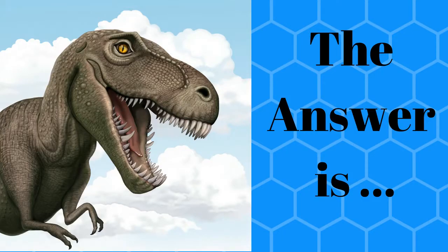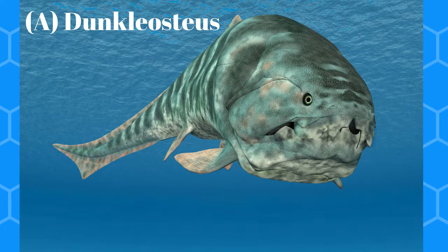The answer is A, Dunkleosteus. The Dunkleosteus was a predator that had bony plates all over its body. The fossil record indicates it may have routinely regurgitated prey bones rather than digest them. Thanks for watching.